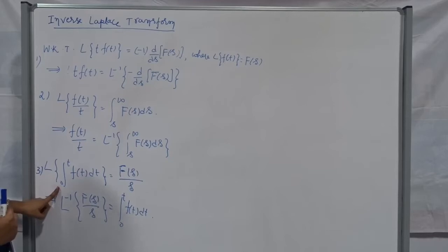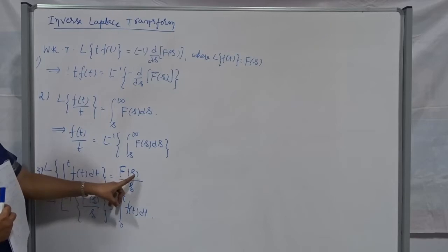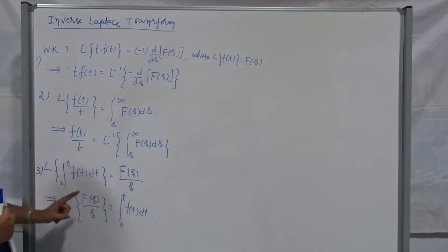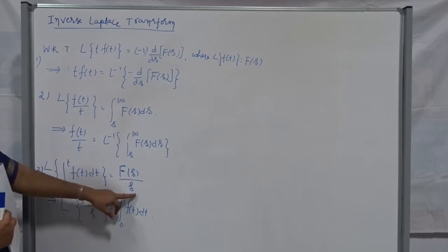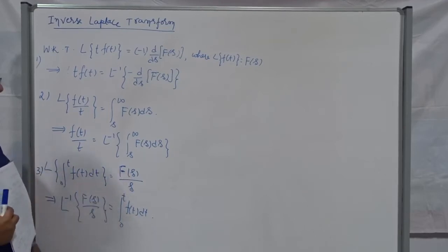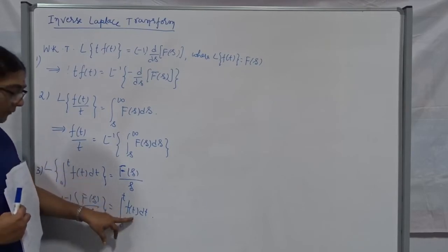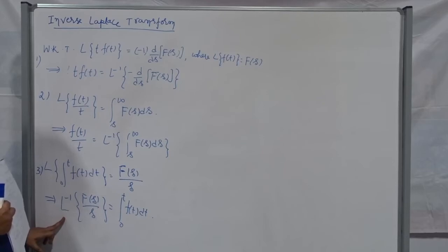The third one, also discussed in the Laplace transform: the Laplace transform of the integral from 0 to t of f(t) dt is nothing but F(s)/s. So L-inverse of F(s)/s equals the integral from 0 to t of f(t) dt. We are going to use this formula whenever the denominator has S and it's possible to bifurcate S from the numerator, and after finding F(s) it's possible to evaluate f(t).